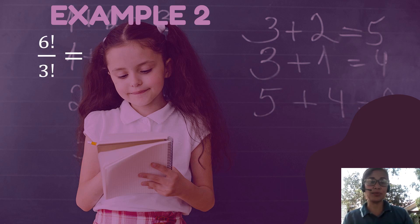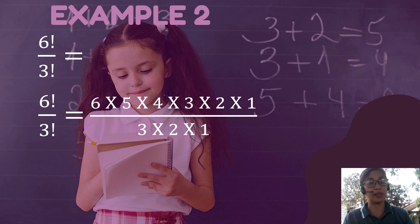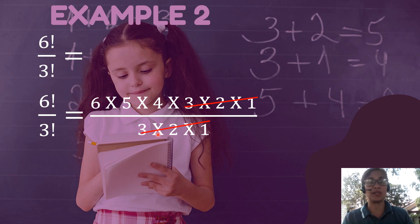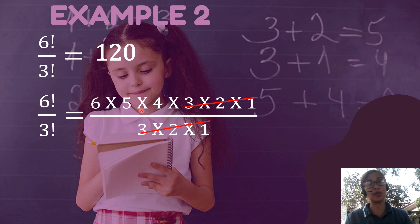Moving on with example 2, we have 6 factorial over 3 factorial, or simply 6 factorial divided by 3 factorial. The numerator is 6 times 5 times 4 times 3 times 2 times 1, and the denominator is 3 times 2 times 1. Before multiplying all these numbers, we can actually cancel common factors. We see 3, 2, 1 on top and 3, 2, 1 on the bottom, so we can cancel both. What is left on top is 6 times 5, which is 30, times 4, which is 120. So the value of 6 factorial over 3 factorial is 120.